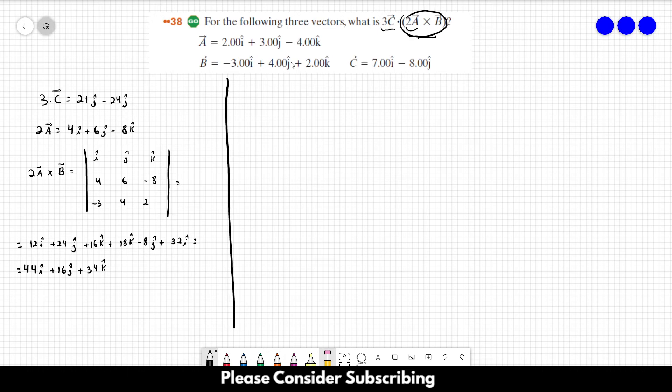So now we have to do the dot product between 3C and this vector. So we are going to do 3C dot 2A cross B, and this is equal to 21 J hat minus...